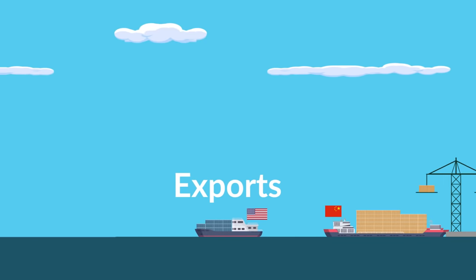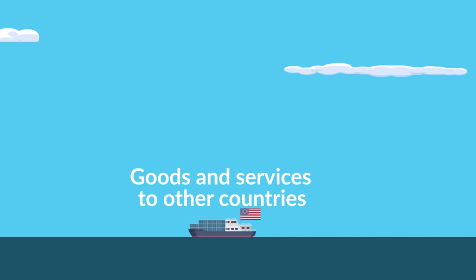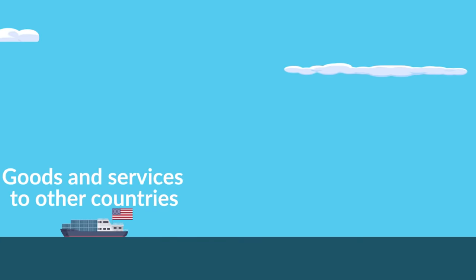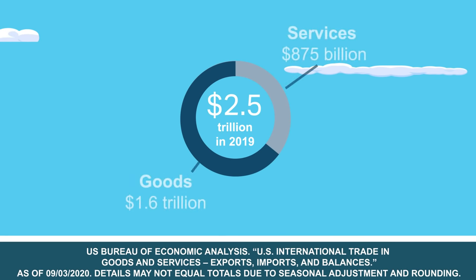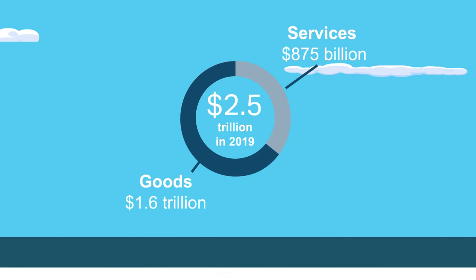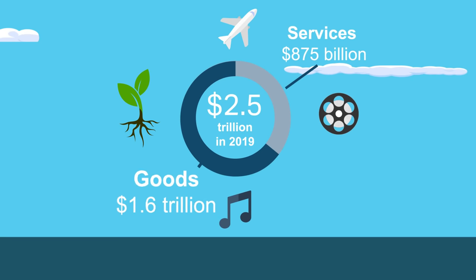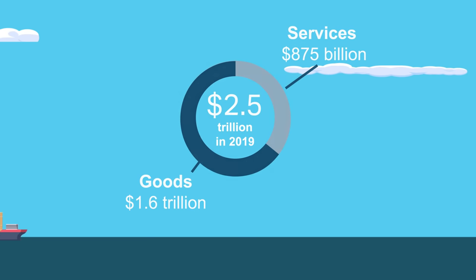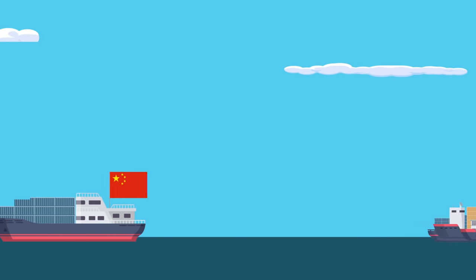The other side of the trade equation is exports, which are goods and services sent to other countries. The United States shipped around $2.5 trillion worth of exports to other countries in 2019. That includes everything from aircraft and agricultural products to movies and music. Goods made up around two-thirds of total exports.